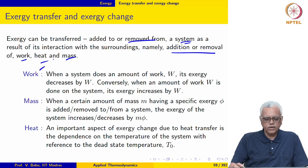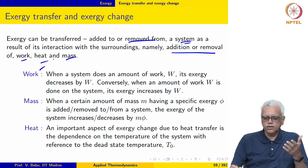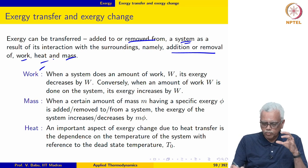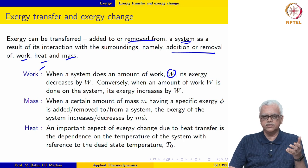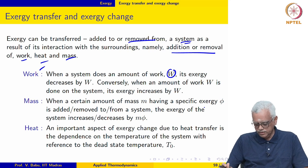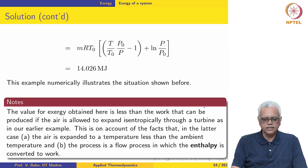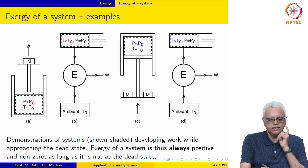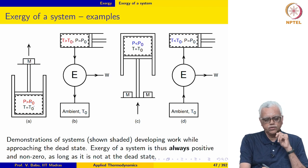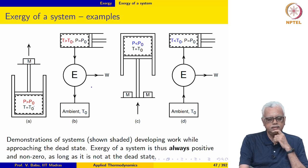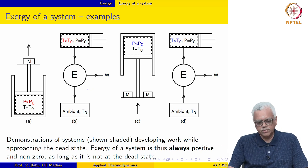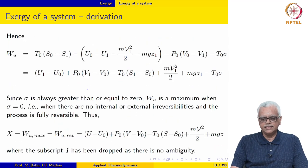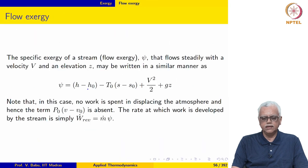Let us first look at work interaction. When a certain amount of work W is done by the system, its exergy decreases by W. As we saw in our earlier illustration, here the system does a certain amount of work as it undergoes an expansion process. As it does work, its exergy decreases because it is raising a mass. So as the system does work, its exergy decreases by however much work it puts out.